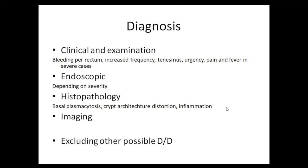The more the rectal involvement, the more the tenesmus and urgency. In acute severe ulcerative colitis, patients may have pain abdomen, abdominal distension, and fever. Clinical examination is most important — on abdominal examination, you must rule out signs of peritonitis, as that is one of the indications for emergency surgery in ulcerative colitis.